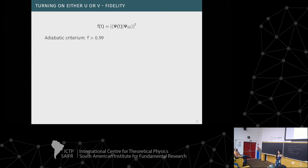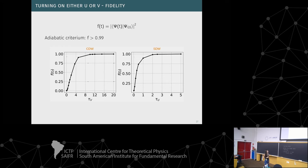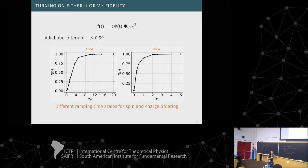To characterize the adiabatic regime more precisely, we studied the fidelity between the evolved state and the instantaneous equilibrium ground state. It goes to one for both quench number one and quench number six for large taus. But the scales are different: for the quench towards the spin-density-wave, we need smaller times — faster quenches are already enough to obtain this adiabatic evolution.